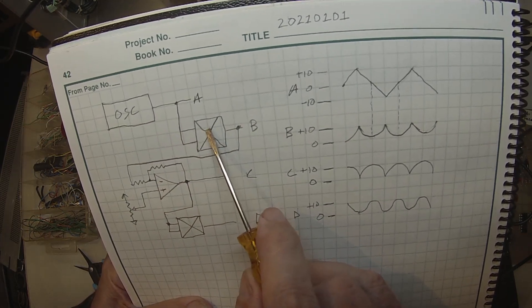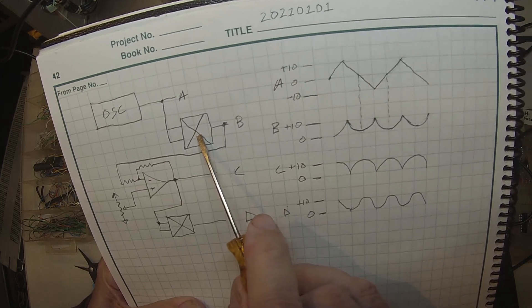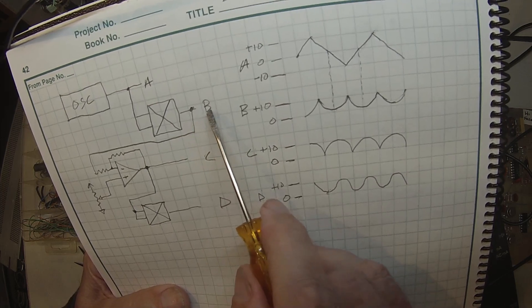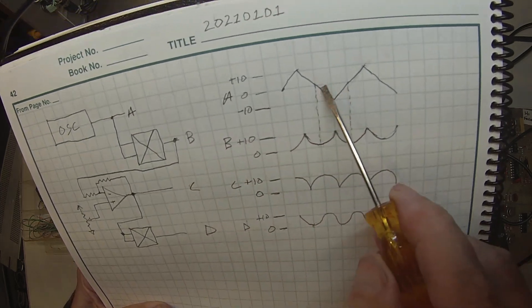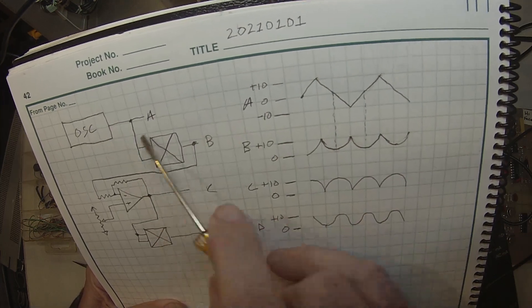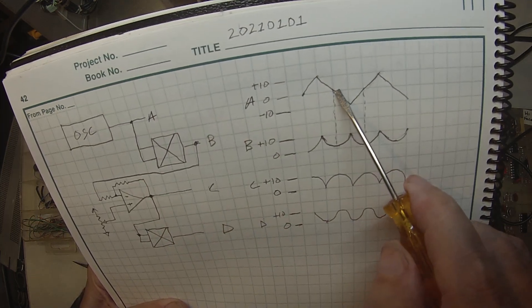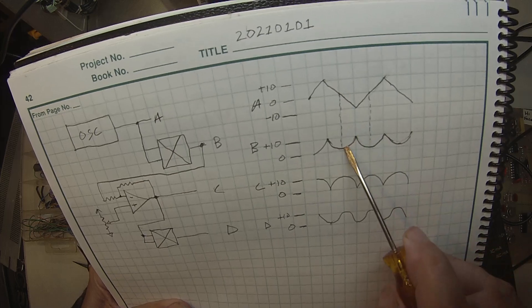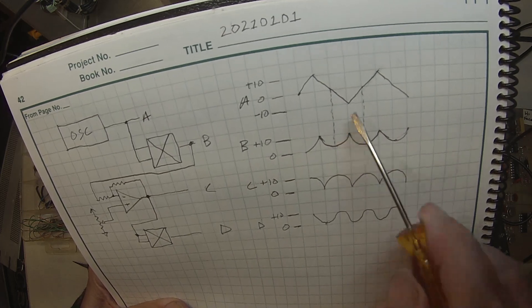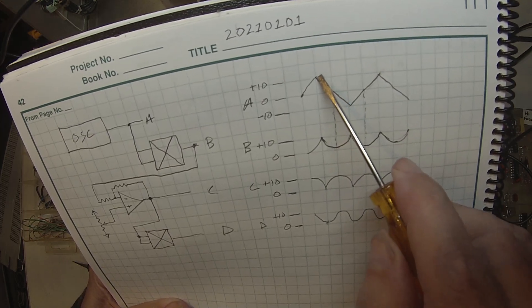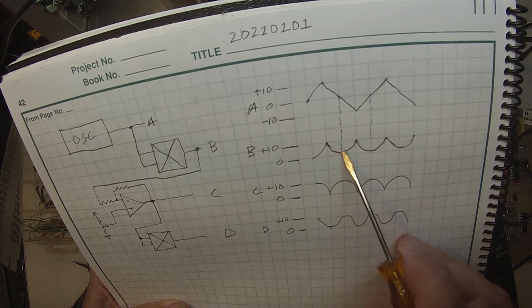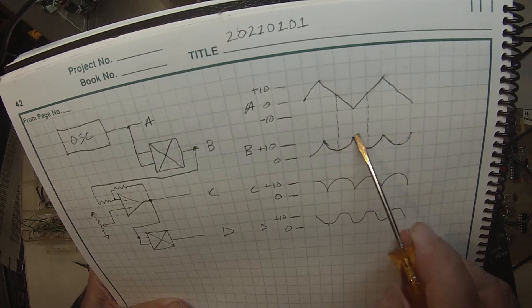Which basically is going to square the signal. So when the triangle wave coming out of the oscillator crosses through zero, that's when the output's going to be zero. But as it moves either positive or negative, it causes the output to go up by the square.